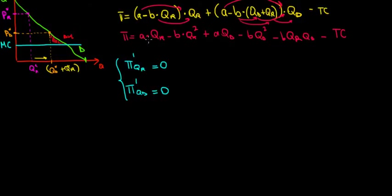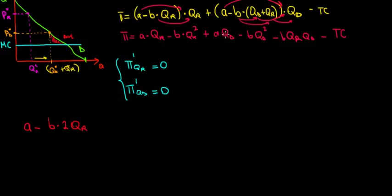From the revenue terms: a times qr, derivative with respect to qr, gives us just a. Then minus b times qr squared, derivative with respect to qr, gives us b times 2qr. The terms with no qr — specifically a times qd and the cross term — both become zero.